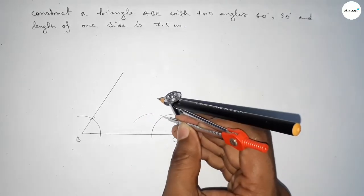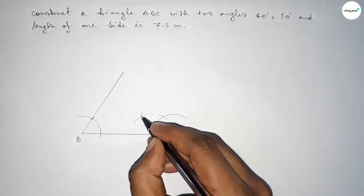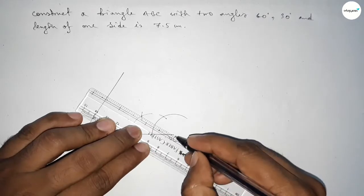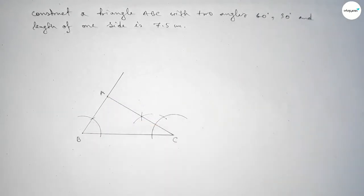Cutting here with the same length, putting the compass here and cutting so both curves intersect at a point. Now joining this line to get a 30 degree angle, and both lines intersect at point A.